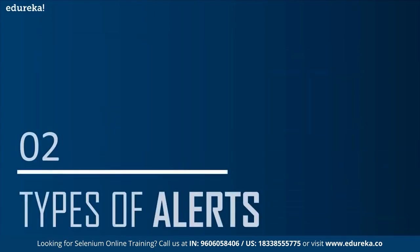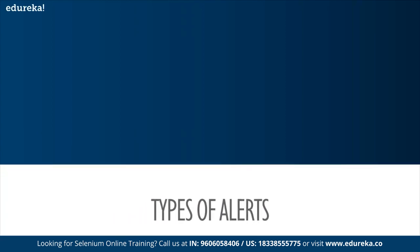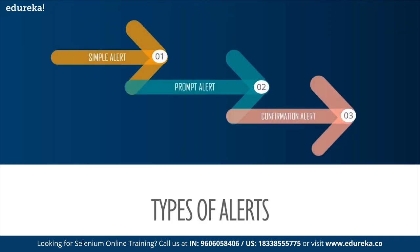Let's move on and understand what are the different types of alerts. There are a few common types of alerts that you might get while testing an application. They are basically a simple alert, a prompt alert, and a confirmation alert. Let's understand them in detail.